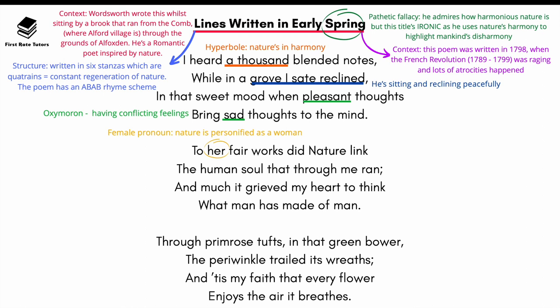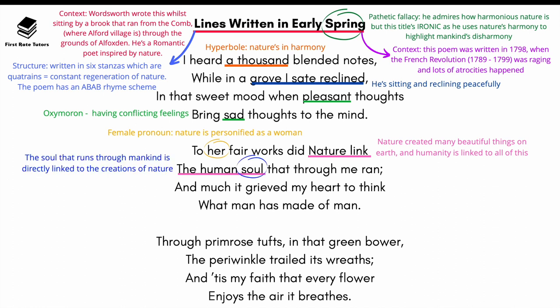In the second stanza, Wordsworth personifies nature as a woman — similar to how we talk about 'Mother Nature.' He describes how 'to her fair works did Nature link the human soul,' meaning nature has created many beautiful things on earth and humanity is linked to all of this. The soul running through mankind is directly linked to nature's creations.